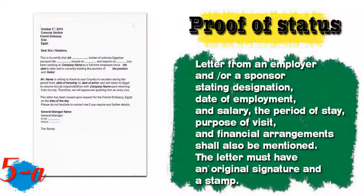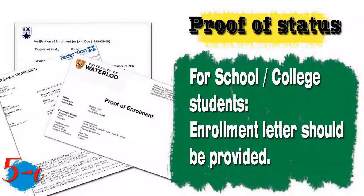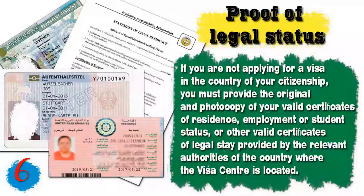Number five: you will need a proof of status. If you are an employee, you need a letter from an employer or HR office stating your designation, date of employment, salary, period of stay, purpose of visit, and financial arrangements. The letter must have an original signature and stamp. If you own or are a partner in a company, provide a copy of the commercial registry and tax card. If you are a student, an enrollment letter must be provided.